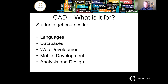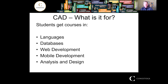You get courses in computer languages, databases, web development, mobile application development, and something called systems analysis and design. Historically, graduates of software development programs would get jobs as programmers or coders. There are more senior positions called systems analysts — people from that background but with experience. In recent decades, a new hybrid position has developed: the programmer analyst. Nowadays, most programmers do a certain amount of analysis and design, and those are very attractive positions for our graduates.